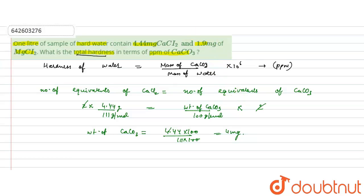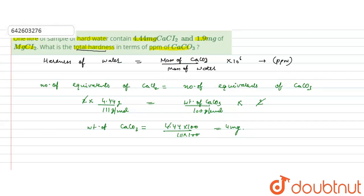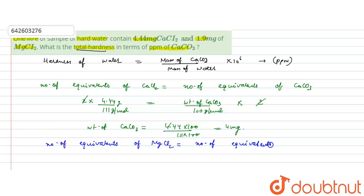Now, when magnesium chloride forms calcium carbonate, the number of equivalents of magnesium chloride equals the number of equivalents of calcium carbonate. So: number of equivalents of MgCl₂ = number of equivalents of CaCO₃.